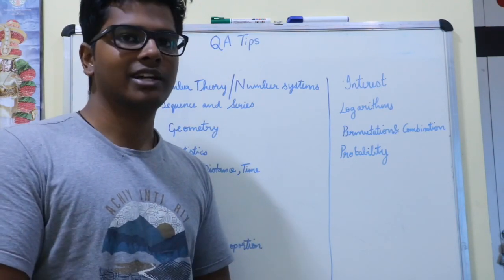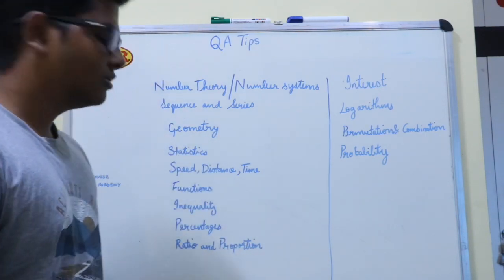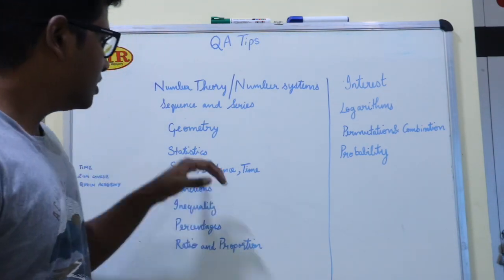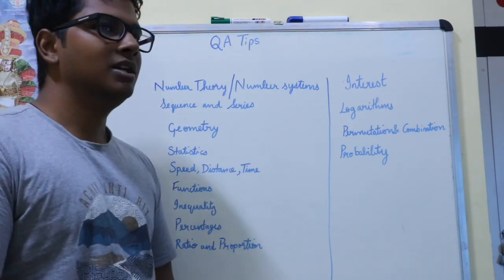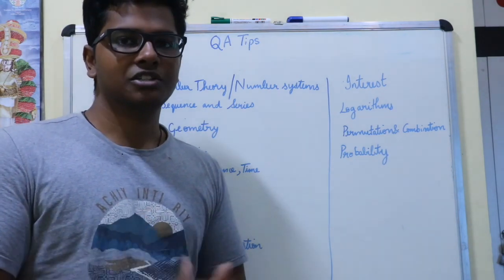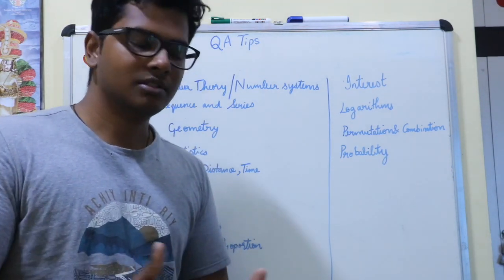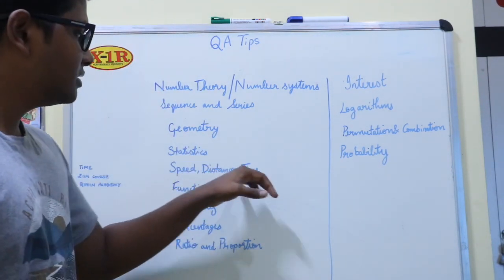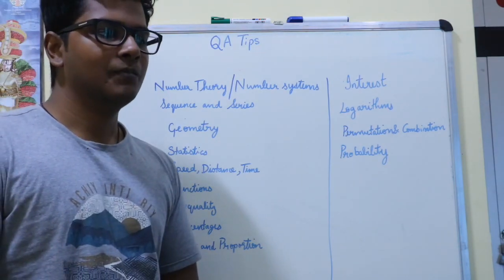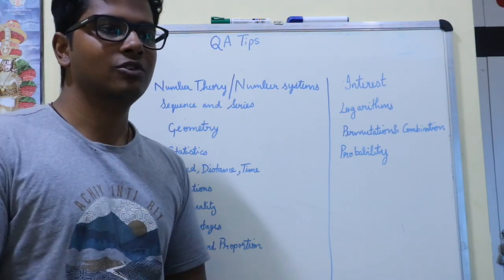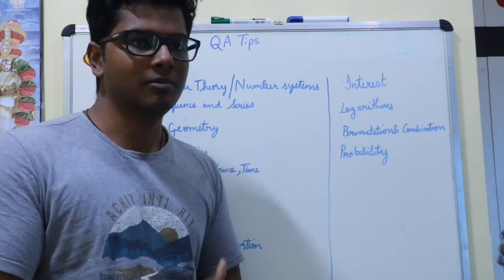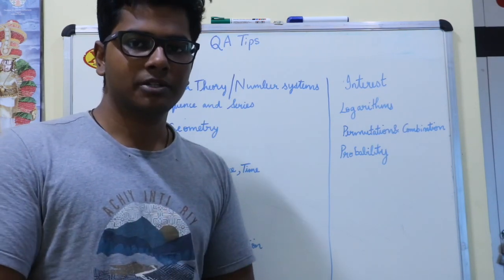Geometry covers polygons, circles, and triangles. Statistics includes mean, median, mode, average, standard deviation, and variance. Speed, distance, and time is based on the formula speed = distance / time, along with certain other formulas you'll need to learn.